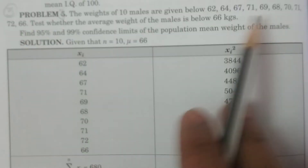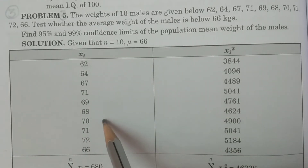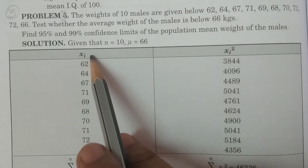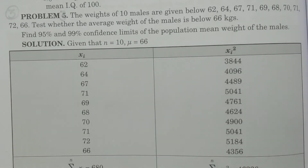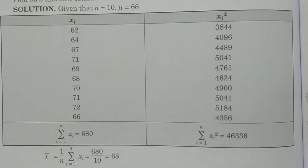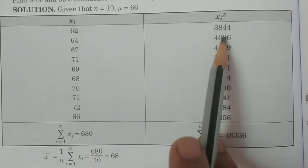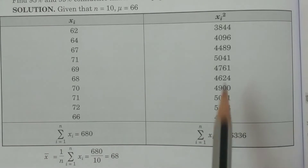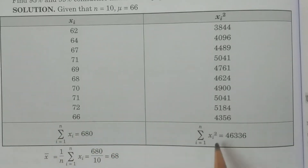These are the 10 observations: 62, 64, 67, 66, etc. — which I consider the sample observations x. We need to calculate summation xi and summation xi square. Summation xi = 680, and summation xi square = 460336.